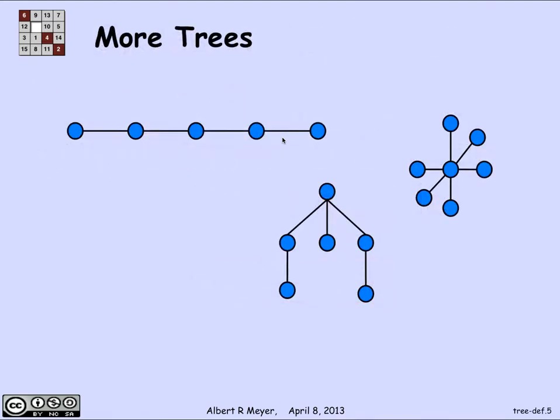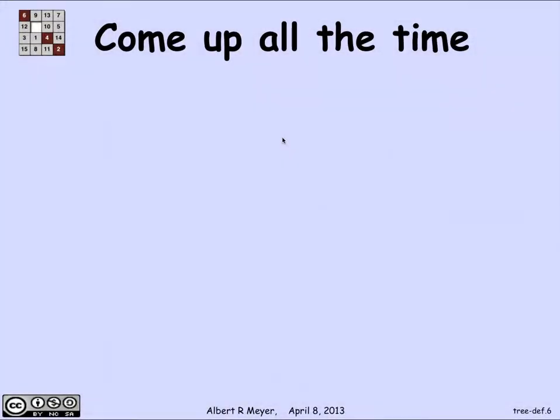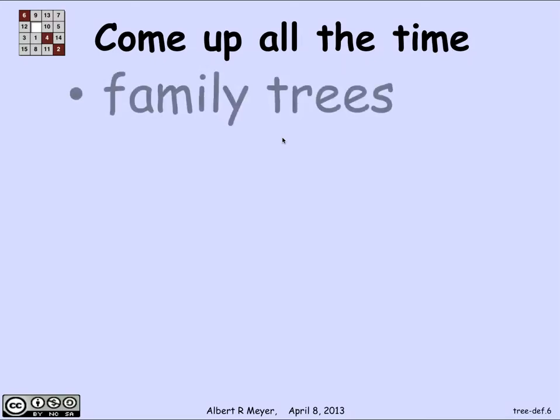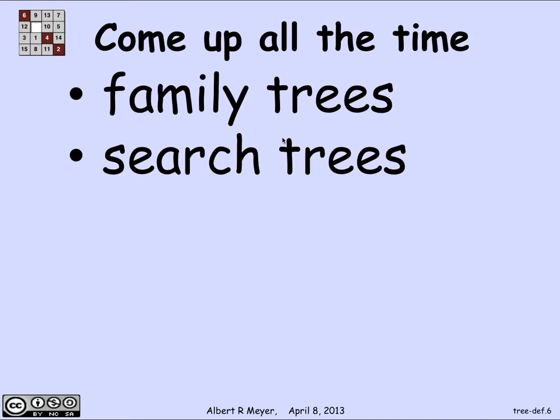Here are some more pictures of trees — simple graphs with no cycles. Now they really come up all the time, and why is that? There are family trees which you may be familiar with, where you draw a picture of the descendants of a given person and they keep branching out in a tree structure as traditionally displayed. There are search trees which come up all the time in computer science, where you branch on the answer to some question which tells you which way to search next.